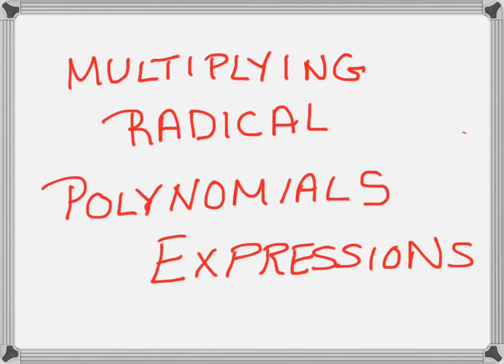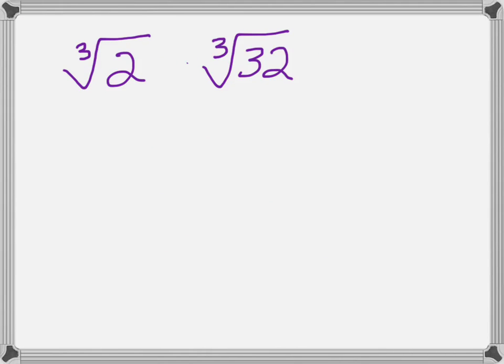Okay, today we're going to learn about multiplying radical polynomial expressions. Let's start with multiplying the cubic root of 2 times the cubic root of 32.